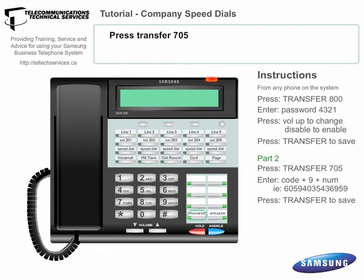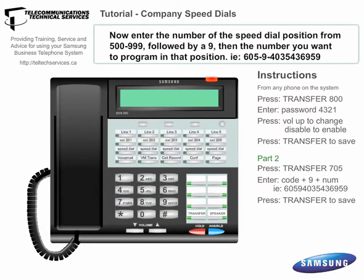Now press Transfer 705, and you can enter the number of the speed dial position you want to make or update, from 500 to 999, followed by the number to dial.